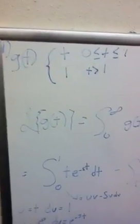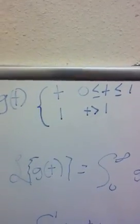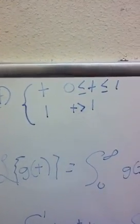All right, this is the solution to quiz 13. It says calculate the Laplace transform of the ramp function g of t, where g of t equals t when t is 0 to 1, and g of t equals 1 when t is greater than 1.